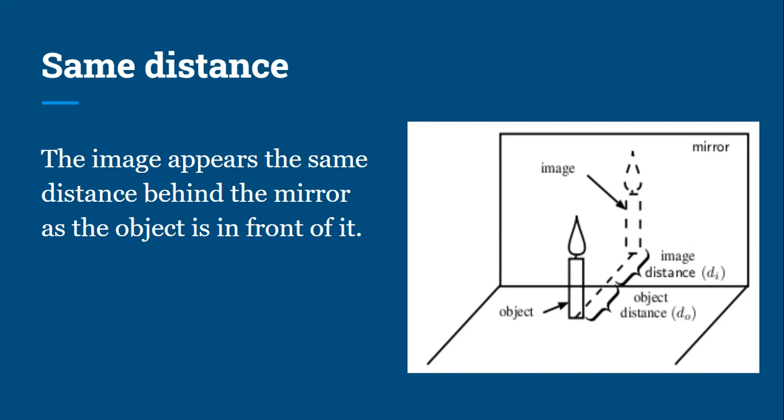The image formed in a mirror is at the same distance as the object is from the mirror. Thus, if the object is placed near the mirror, the image formed will be closer to the mirror, and when the object is placed far away, the image formed will also be far away. You can observe this with your own reflection by moving closer or farther away from the mirror.